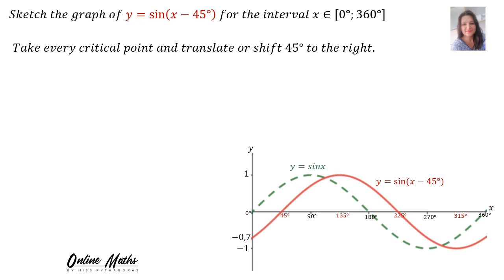Sketch the graph of Y is equal to sin(X minus 45) for the interval 0 up to 360. If you look at the graph, the green one is the original sin graph Y = sin X, and then the red graph has been translated or shifted 45 degrees to the right. Our first critical point used to be at 0, so now we say 0 plus 45 is 45. It's very clear that this is where your graph will cut the X axis.